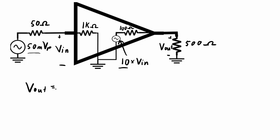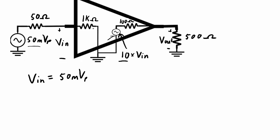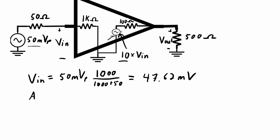The output voltage comes from the combination of the input applied to the voltage divider at the input, getting multiplied by the voltage gain indicated by the voltage source inside the amplifier, and then that voltage gets applied across the voltage divider between the 100 ohm output impedance and the 500 ohm load. Let's work through this step by step. First, let's figure out what Vin would be. Vin is simply this 50 millivolt peak signal split between the 50 ohm output impedance and the 1 kilohm input impedance.